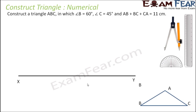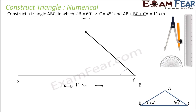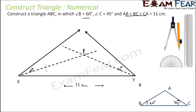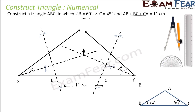Now let's take a numerical example using the same concept. Construct a triangle ABC where AB plus BC plus CA equals 11 centimeters, angle B equals 60 degrees, and angle C equals 45 degrees. First, we draw an 11-centimeter line segment. Then we draw a 45-degree angle at one end and a 60-degree angle at the other. We draw the angle bisectors — they meet at point A. Then we draw perpendicular bisectors of AX and AY, meeting the base at B and C. Triangle ABC is the required triangle.